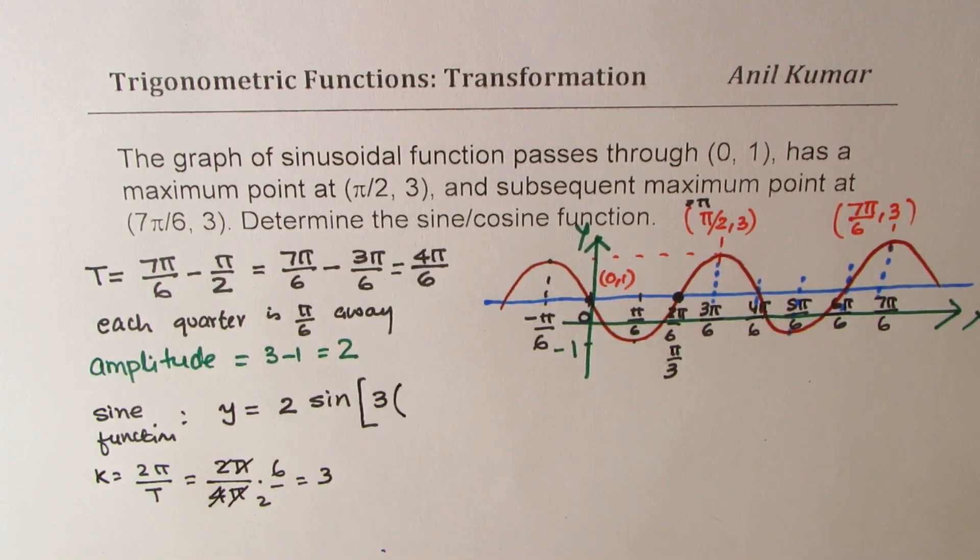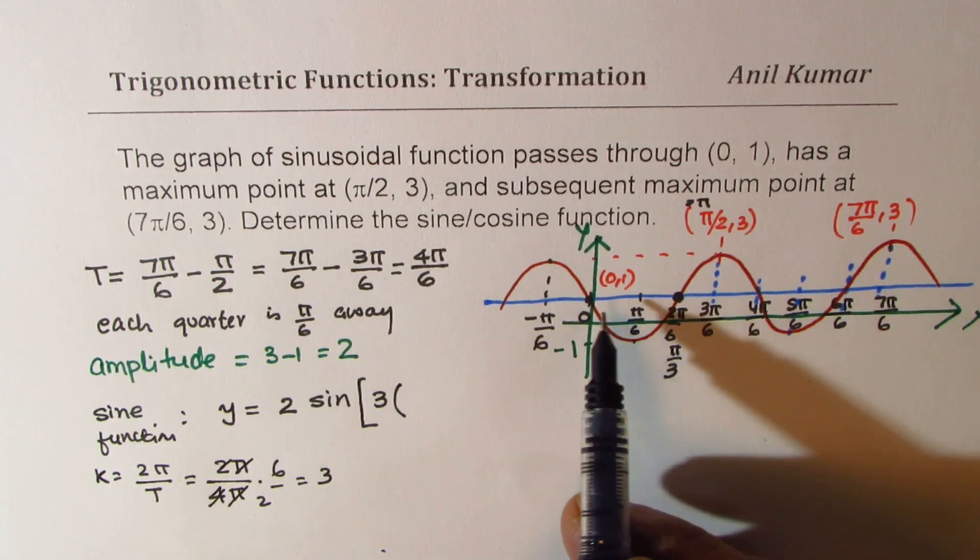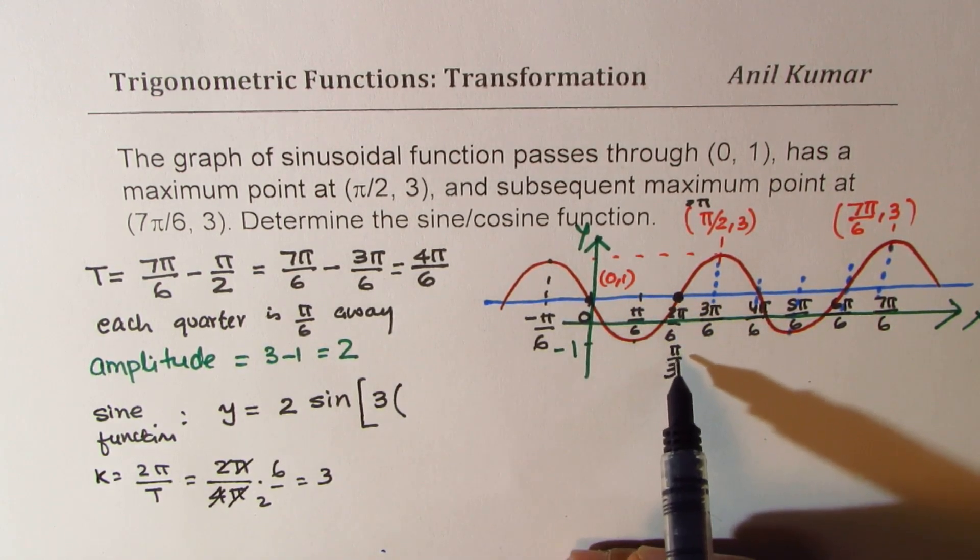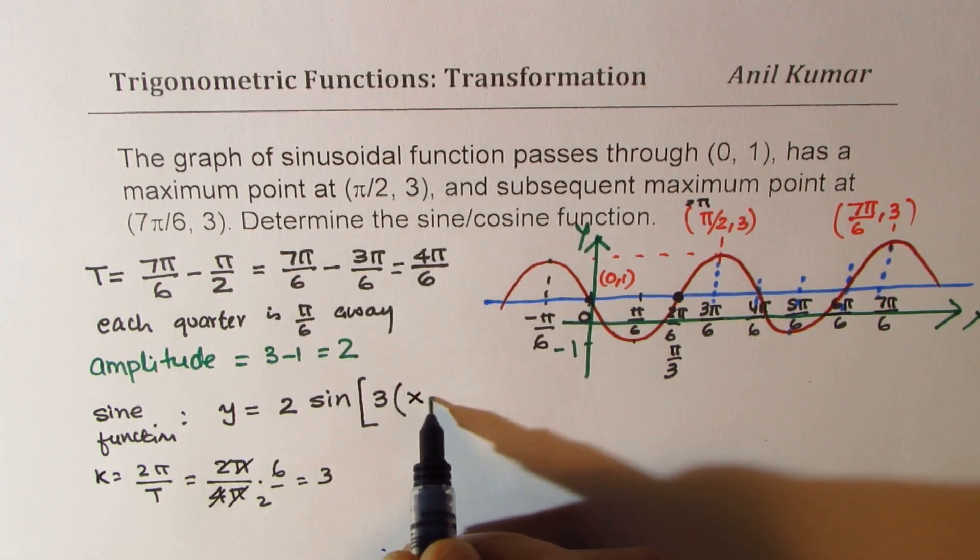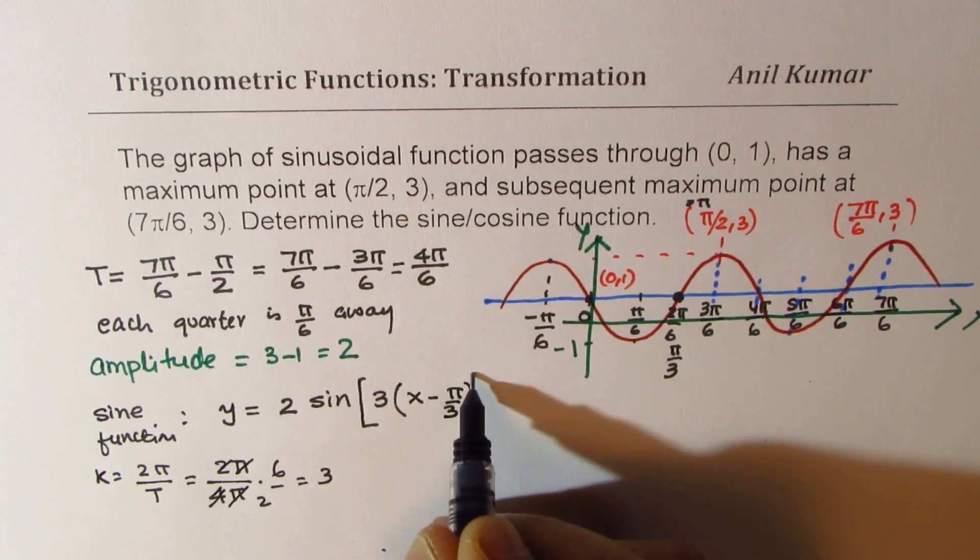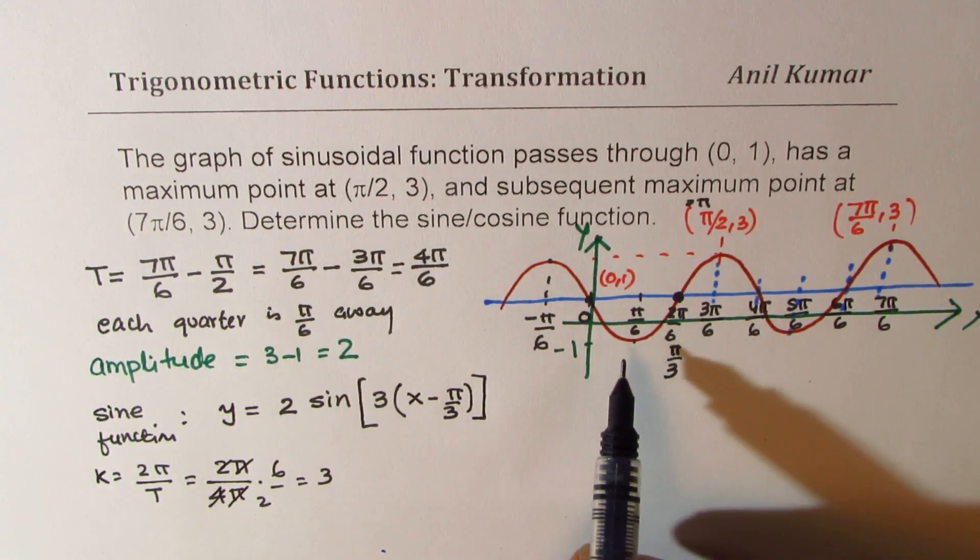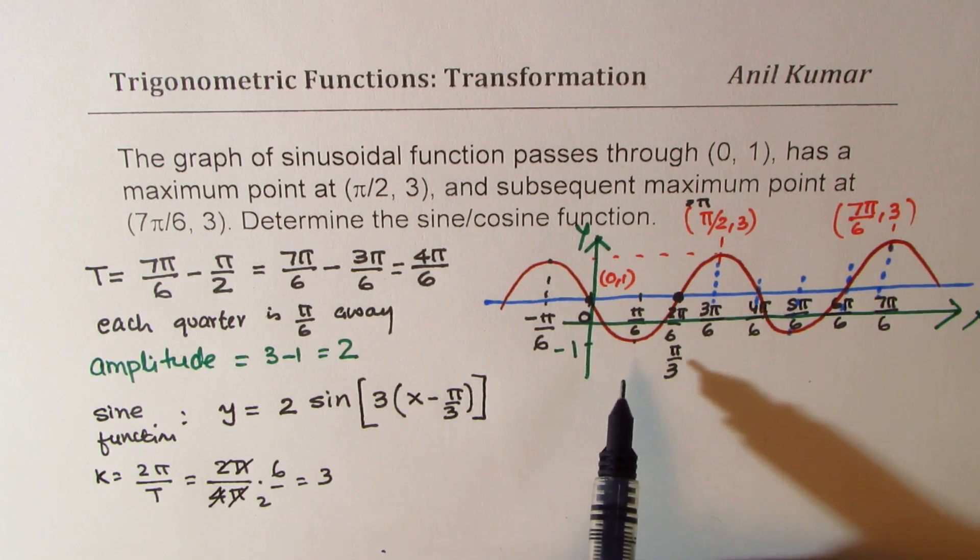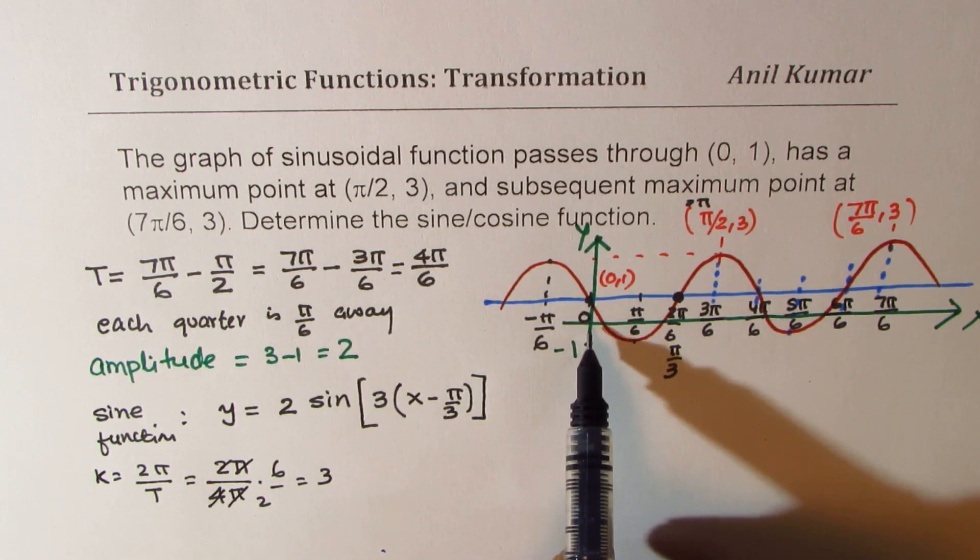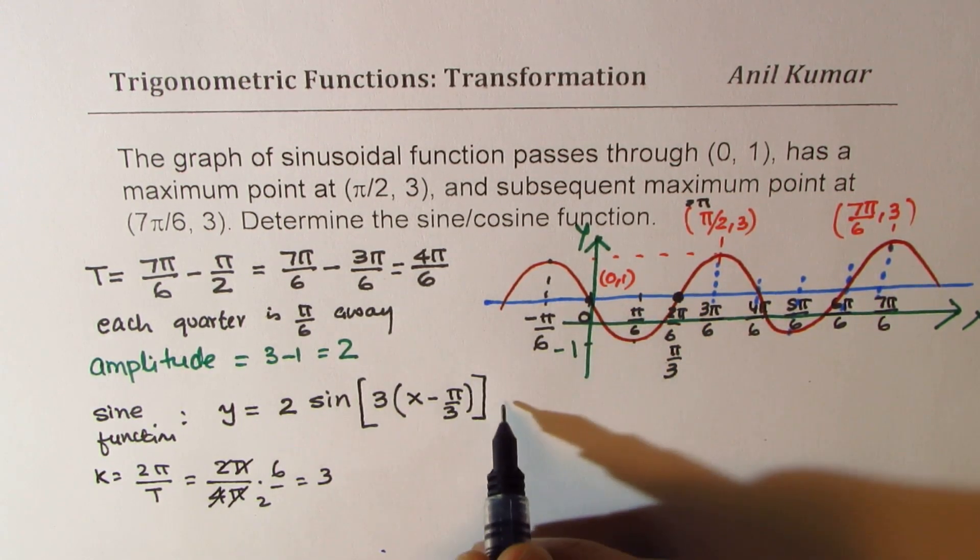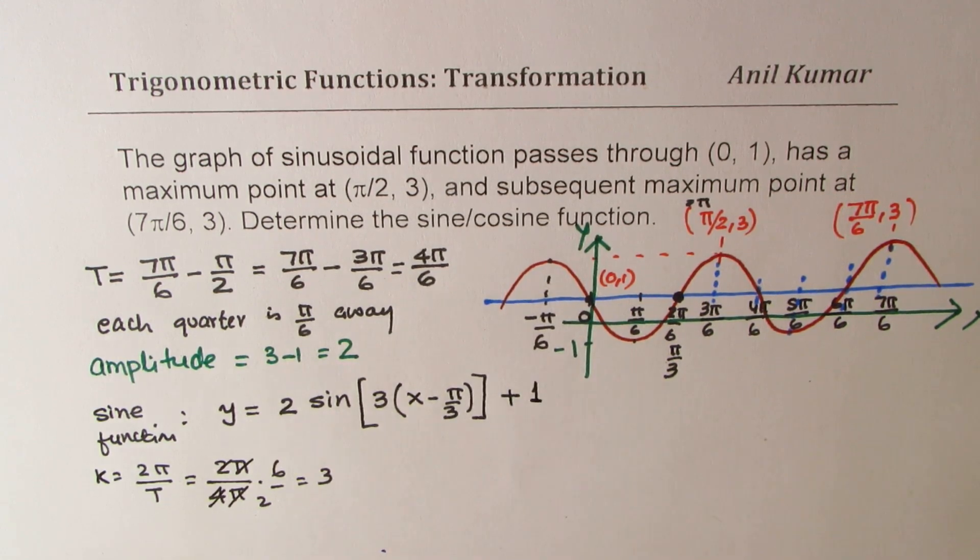Phase shift. Since the sine wave starts after π/3, it will be x minus π/3. And the axis is moved up by 1 unit. So you get plus 1. So that is how you are going to get the sine function.